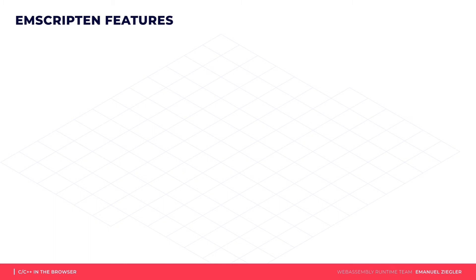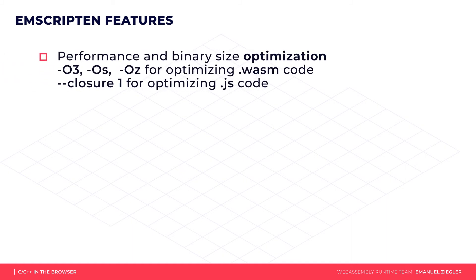Emscripten supports most standard command-line parameters of common C and C++ compilers, like -O with several optimization levels and specific optimizations for size, which can be very useful if bandwidth is an issue. It also provides options specific to WebAssembly — for example, --closure, which allows running the Closure Compiler on the generated JavaScript code for additional performance and size optimizations.